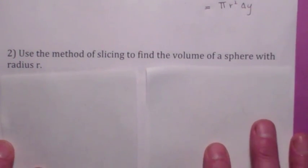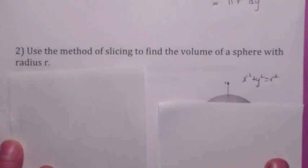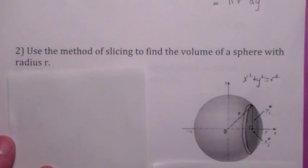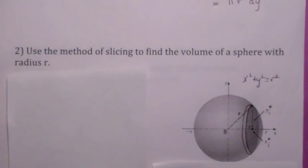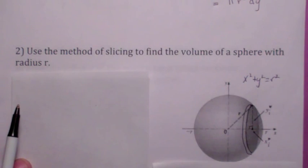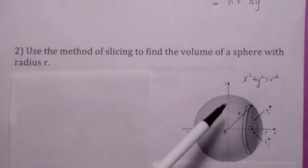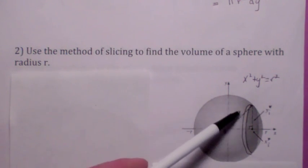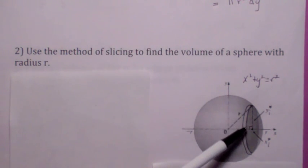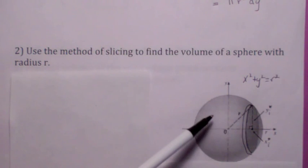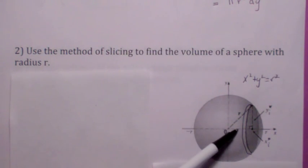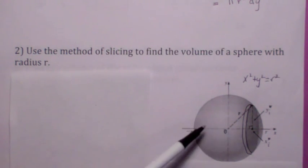What if we have a sphere and you want to find its volume? 4/3 πr³. Instead of thinking of it as revolving a region around the x-axis, we're not going to do that. We're going to slice this sphere perpendicular to the x-axis, look at the volume of that slab and add these up. It would be a dx integration because the thickness is Δx, integrating from −r to r.